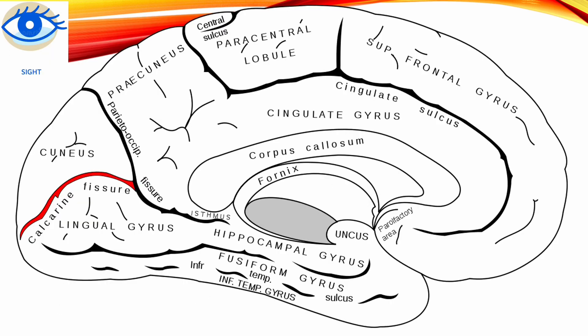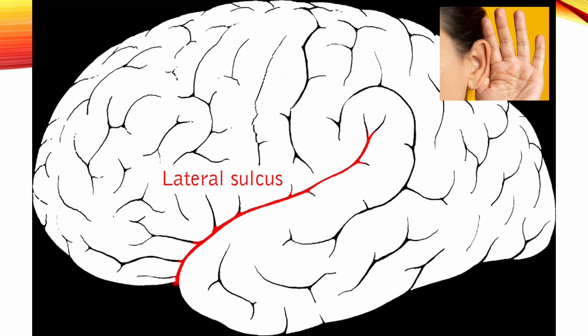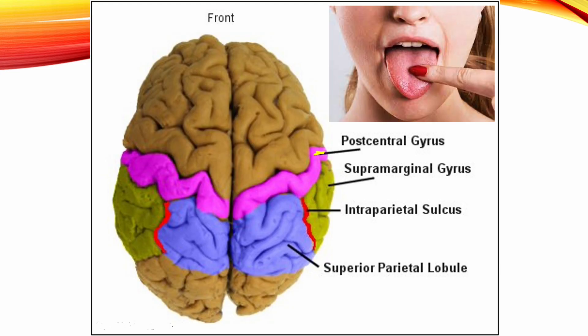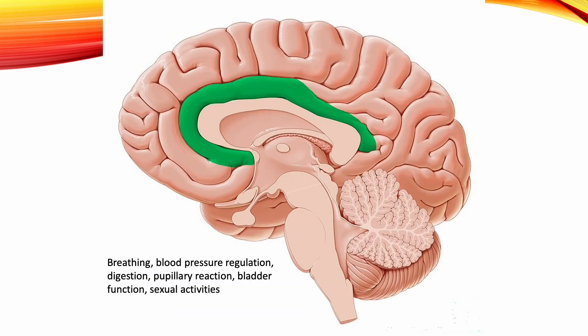Sight is located at the calcarine sulcus of the occipital lobe. Hearing is located below the lateral sulcus on the upper surface of the temporal lobe. Smell is located around the parahippocampal gyrus. Taste is located at the lower part of the postcentral gyrus, close to the temporal lobe. Internal organ activities are located at the gyrus cinguli and parahippocampal gyrus area of the medial side of the hemisphere, and include breathing, blood pressure regulation, digestion, pupillary reaction, bladder function, and sexual activities.